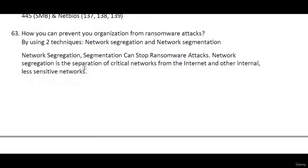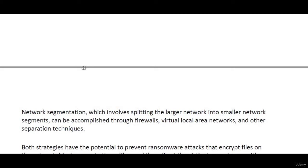In network segregation, we split a large network into two parts — one part is critical data and another part is lesser critical data. We can use VLAN and a firewall on both sides, the critical part and the lesser critical part. What will happen is that once the ransomware attacks the lesser critical part, it is not going to affect the critical data.